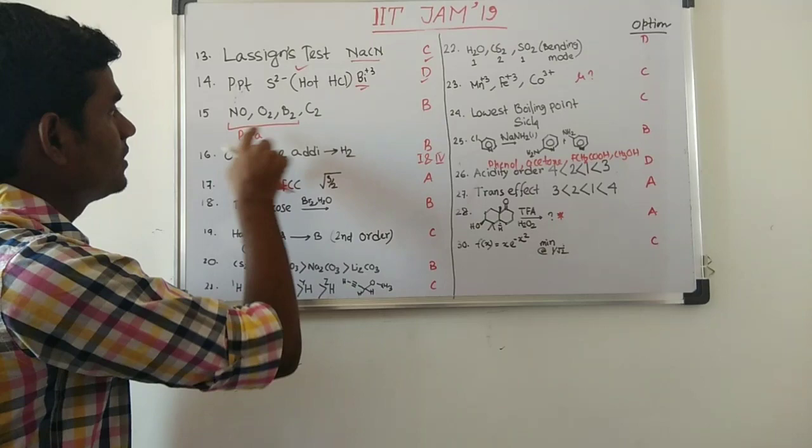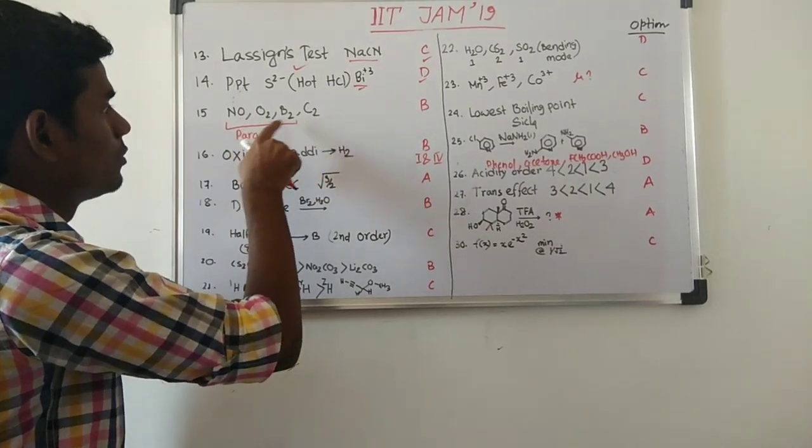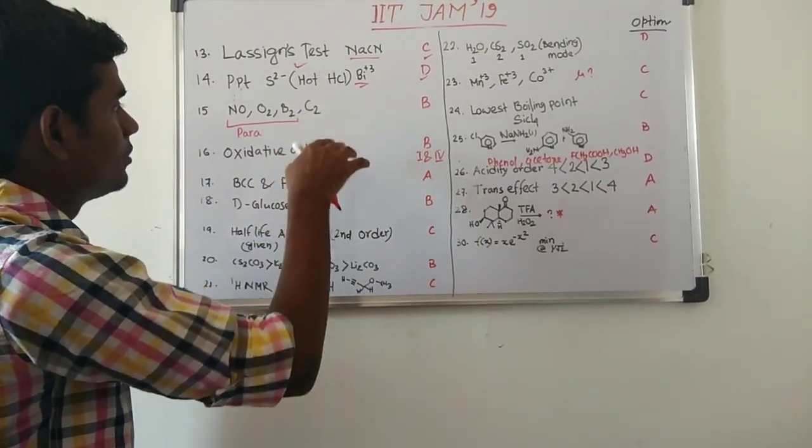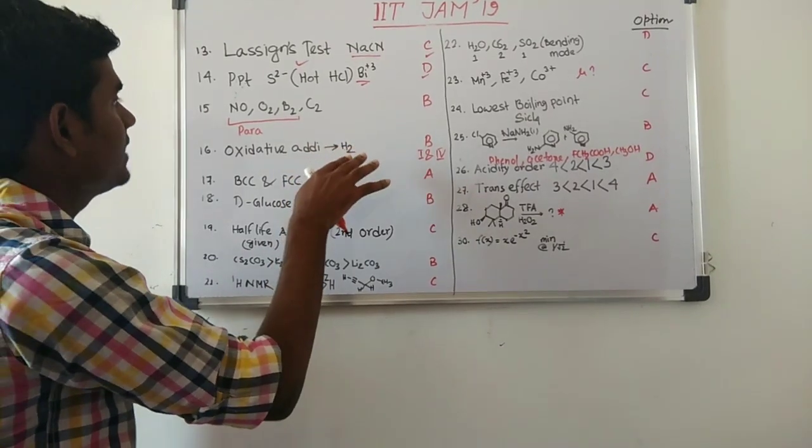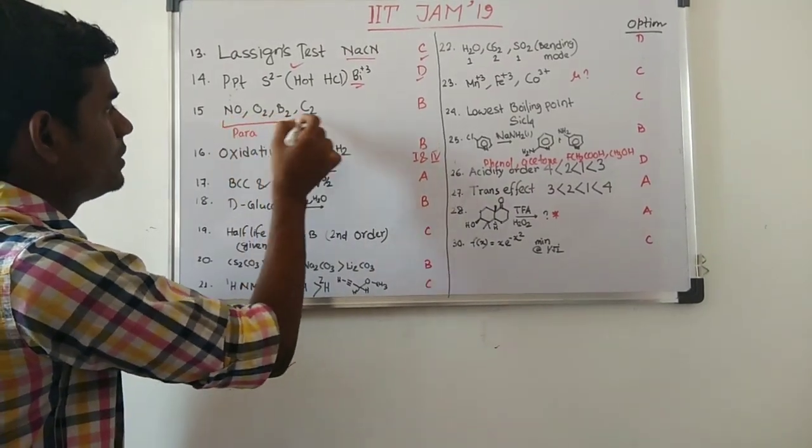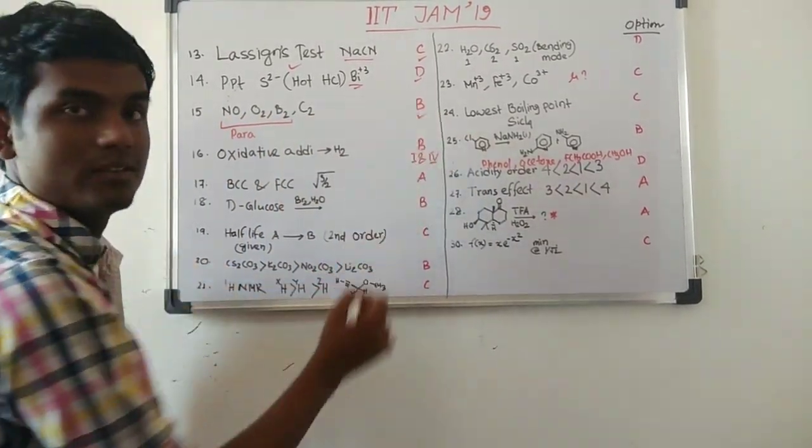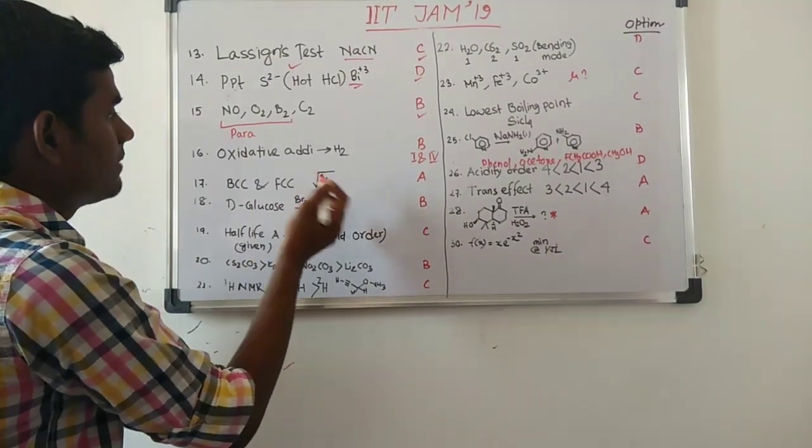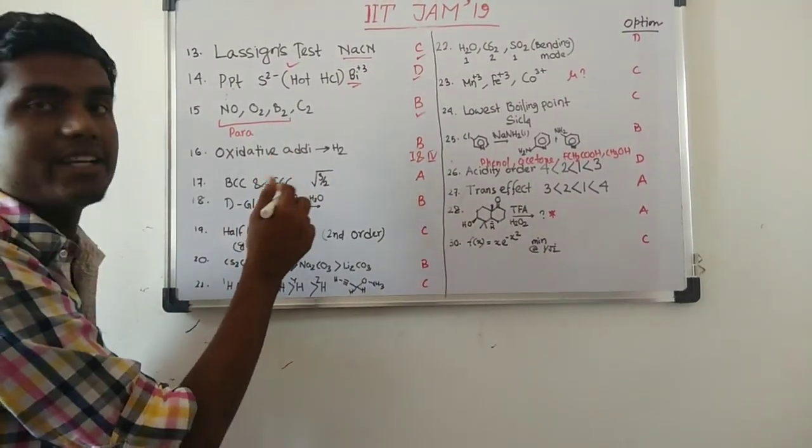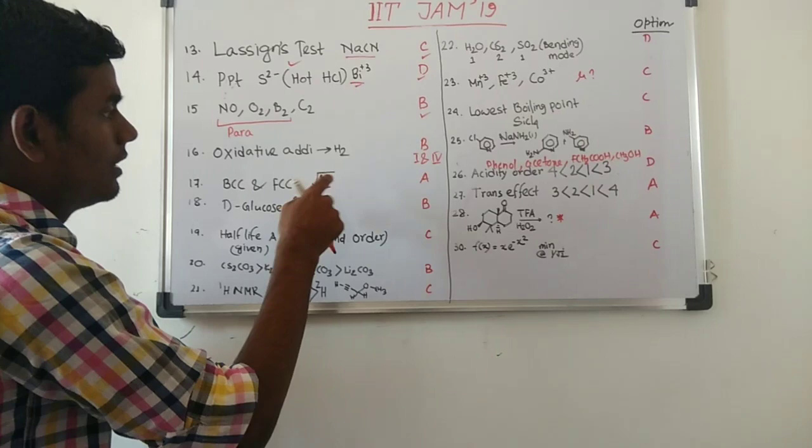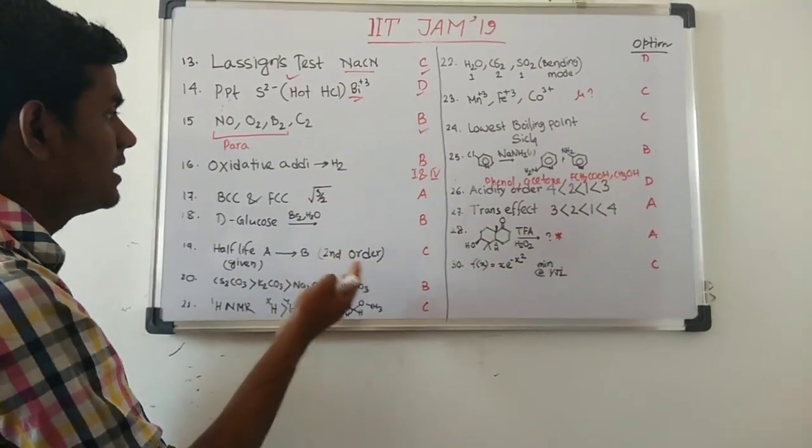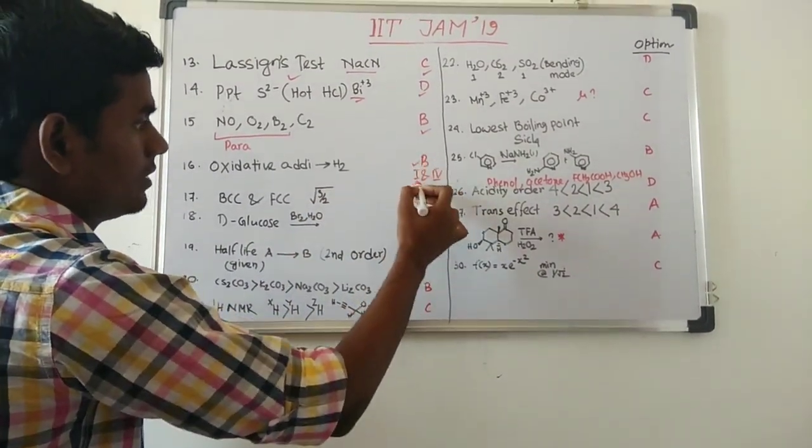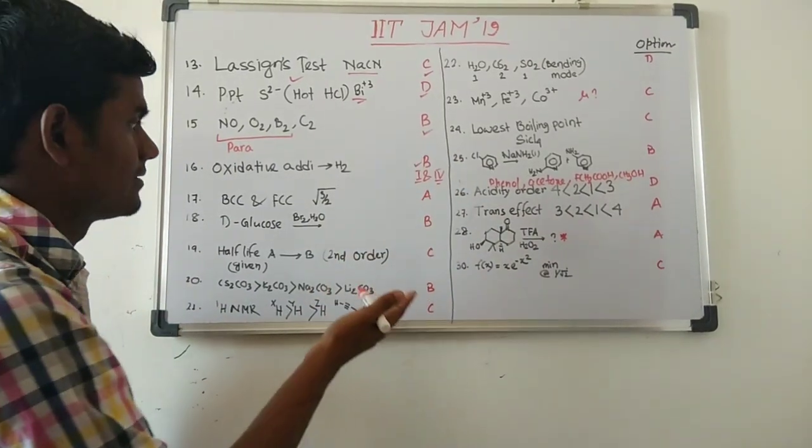Again they have four options given in this manner: NO, O2, B2, C2. Which will be paramagnetic, something like that? So the answer will be NO, O2, B2, C2 and the option is B. And then they have asked one question about oxidative addition. There were two pairs and each pair which one will undergo oxidative addition easily, and the option is B, and one and four are the answers.